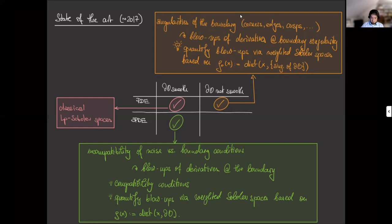Now, if you look at the situation, you see that if you want to do a theory for SPDEs on non-smooth domains, you need to capture both these effects. On the one hand, you have to describe what happens because of this incompatibility between noise and boundary conditions. At the same time, you have to describe what happens because of the boundary singularities, and you have to describe the interaction of these two effects.